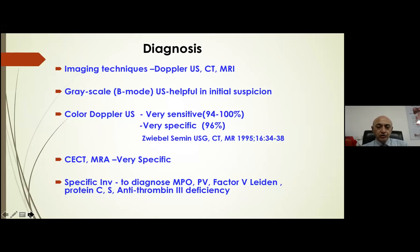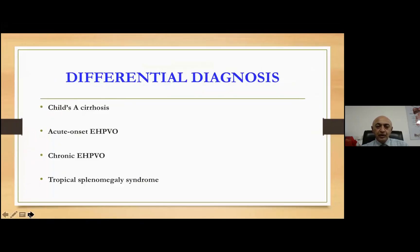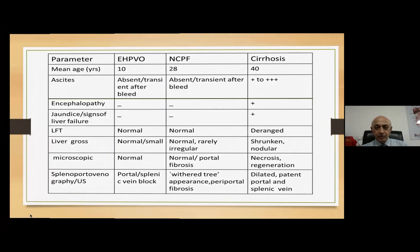For looking at specific etiology, you may have to do specific pro-coagulation tests to look for genetic abnormalities. Differential diagnosis includes Child's cirrhosis, acute and chronic EHPVO of pro-coagulant varieties, and tropical splenomegaly syndrome, which is becoming less common. Early age group — EHPVO; middle age group — NCPF; cirrhosis typically occurs at 40 plus. Patients with EHPVO and NCPF remain stable after bleeding, whereas ascites comes after bleeding in cirrhosis. Portal biliopathy is far more common in EHPVO than in cirrhosis.